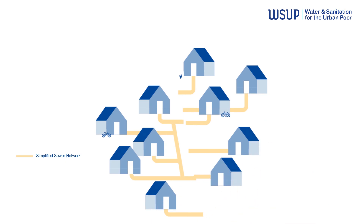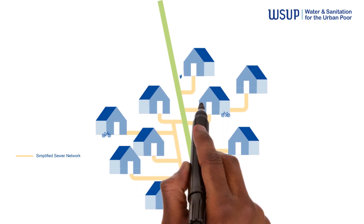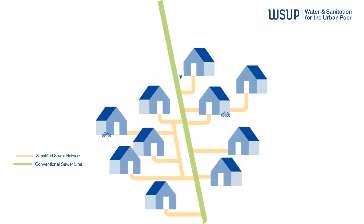Simplified sewers can be installed in almost all types of settlements and are especially appropriate for dense urban areas where space for on-site primary treatment units is limited.